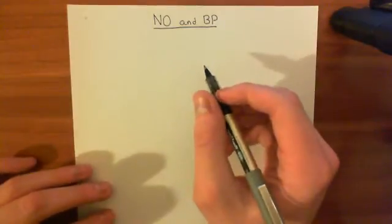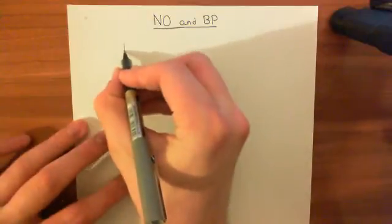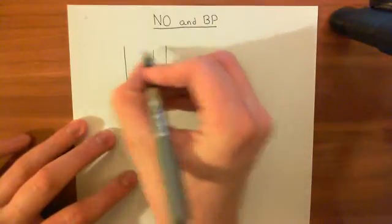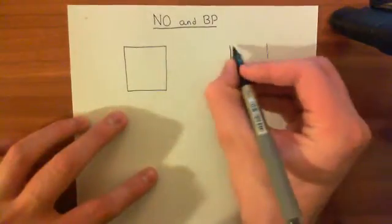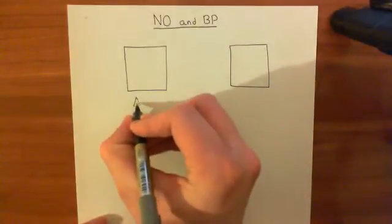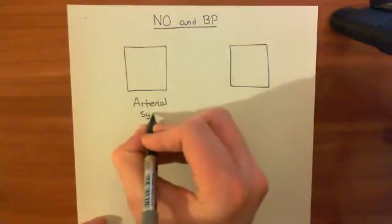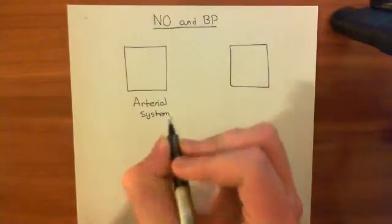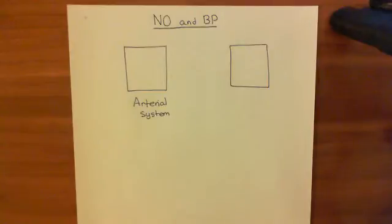So the basic hemodynamic model. There are two systems — I'll draw them as two boxes to make this very simple. This first box represents the arterial system: the aorta, the massive great arteries, the brachiocephalic artery, the subclavian arteries, the carotid arteries, the renal arteries, the mesenteric arteries, the iliac arteries — these huge great arteries, all represented as this box, which we're calling the arterial system.